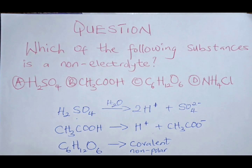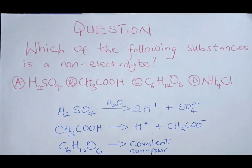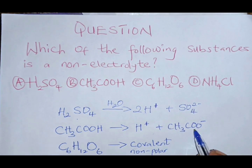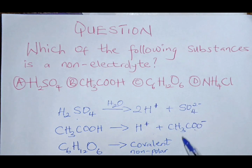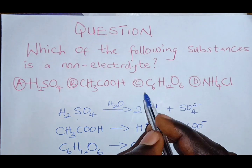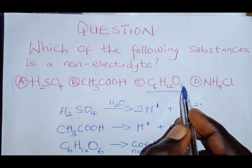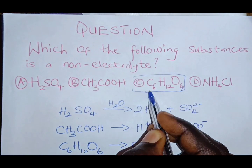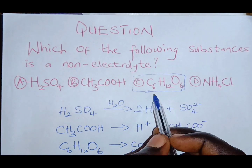Ammonium chloride can dissociate to form ammonium ions and chloride ions, and it can produce electric current when dissolved in water. But glucose cannot. So the correct answer is glucose, which is a non-electrolyte.